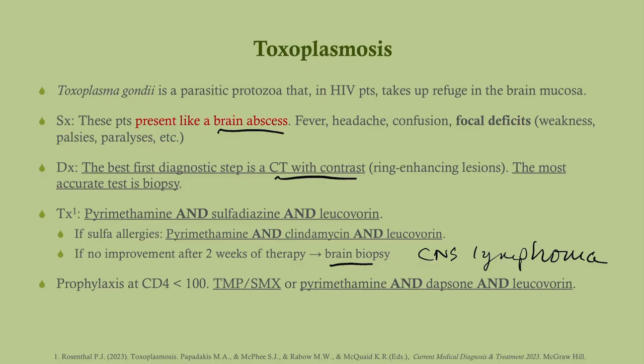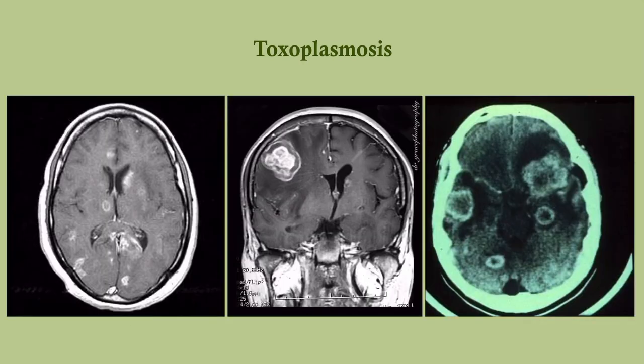We prophylax for toxoplasmosis when the CD4 drops below 100, using either Bactrim or pyrimethamine, dapsone, and leukovorin for sulfa-allergic patients. For non-sulfa-allergic patients, it's straightforward — the trimethoprim-sulfamethoxazole we're already giving for PCP prophylaxis also covers toxoplasmosis below 100. For sulfa-allergic patients, in addition to dapsone already used for PCP prophylaxis, we add pyrimethamine and leukovorin. On CT, you can see these classic ring-enhancing lesions in toxoplasmosis.